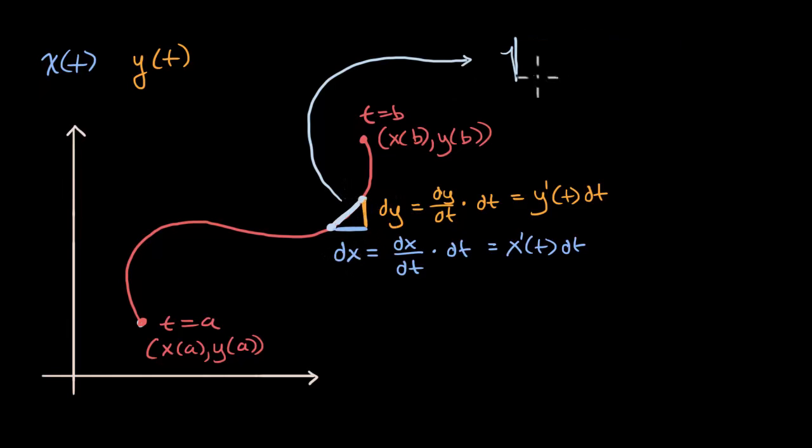So it is the square root of, I'm going to give myself a little bit more space here because I think I'm going to use a lot of it. So the stuff in blue squared, dx squared, we could rewrite that as x prime of t dt squared plus this squared, which is y prime of t dt squared.